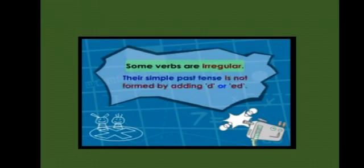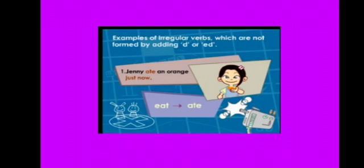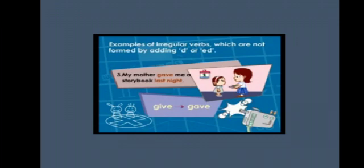However, some verbs are irregular — the simple past tense is not formed by adding D or ED. Let's look at some examples. Jenny ate an orange just now — 'eat' becomes 'ate,' which is the second form of the verb 'eat.' This morning I drank a glass of orange juice — 'drink' becomes 'drank,' the second form of the verb 'drink,' so this sentence is in past tense. My mother gave me a story book last night — 'give' becomes 'gave.'